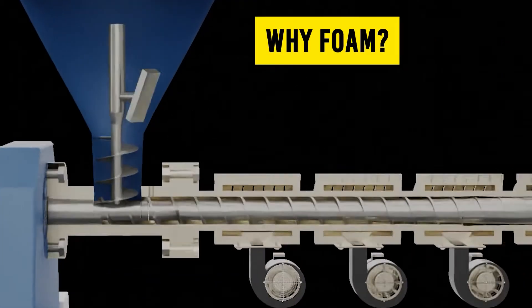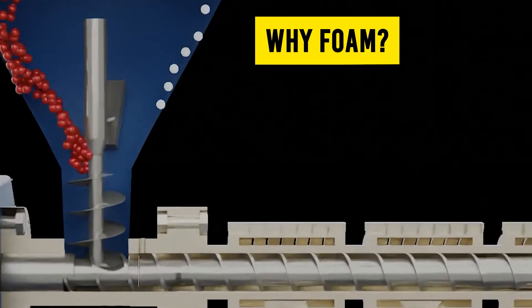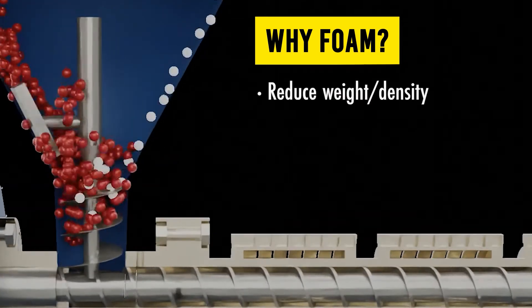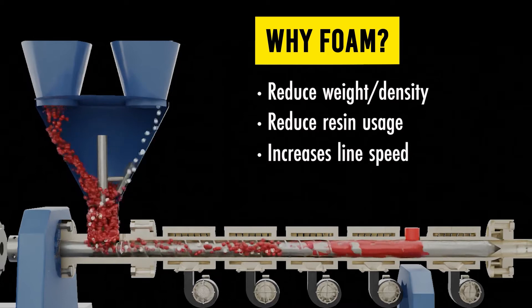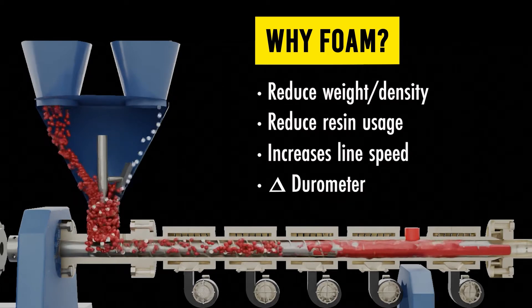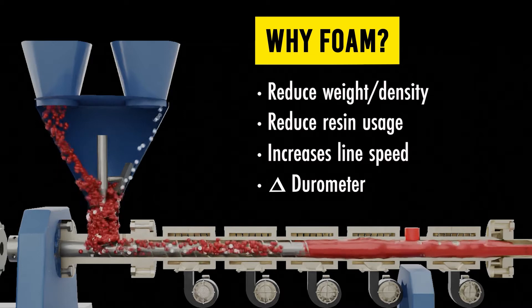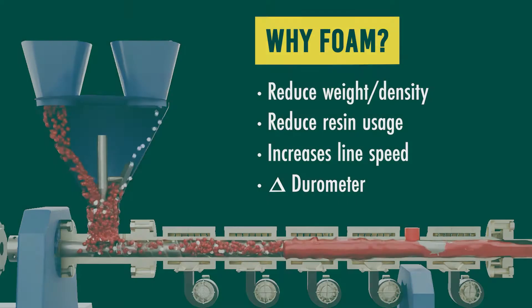So, why foam? The addition of a CFA into an extrusion process allows you to reduce the weight or density of your parts. This reduces your resin usage and increases the throughput by increasing your line speed. It can also aid in changing the durometer of the material.